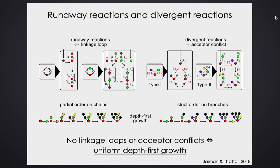When you remove type 2 conflicts, the tree grows in a depth-first manner. When you remove type 1 conflicts, any substrate — a monomer already attached to the tree with some branches and empty carbons — will always have its carbons filled in the same order for the same kind of monomer. I call this growth order 'uniform depth-first growth', which I'll explain in more detail.